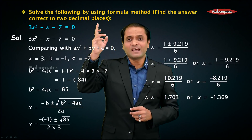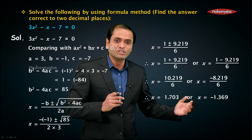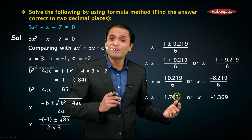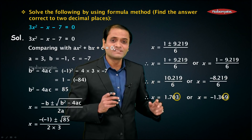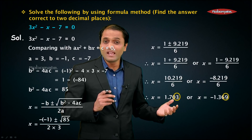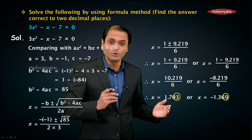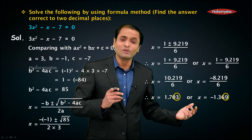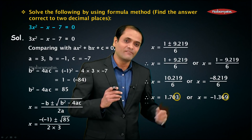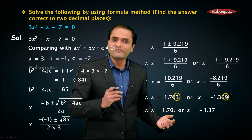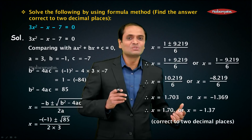The question asks for the answer correct to two decimal places. So let us check the third decimal places in both values. In the first value, the third decimal place is 3 — since 3 is less than 5, rounding gives 1.70. In the second value, the third decimal place is 9 — since 9 is greater than 5, rounding gives -1.37. So x = 1.70 or x = -1.37, correct to two decimal places.